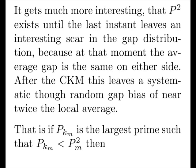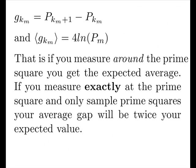That is, if p_km is the largest prime such that p_km squared is less than p_m squared, then finding the gap at that location, on average, it should be equal to 4 times log p. That is, if you measure around the prime square, you get the expected average. If you measure exactly at the prime square and only sample prime squares, your average gap will be twice your expected value.